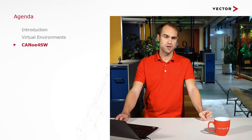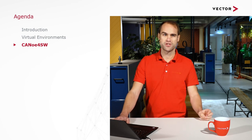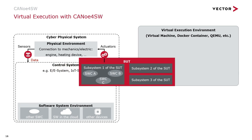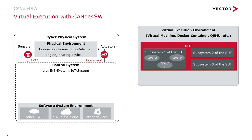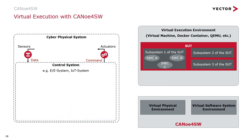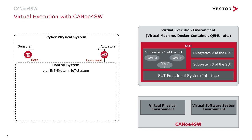To bring all this to life, we have developed a powerful tool at Vector, which is CANoe4SW. First of all, you start by putting your system under test into a virtual execution environment — this could be a virtual machine, a Docker container, or an emulator — pretty much anything that fits best your design flow. You then use CANoe4SW to model your physical environment as well as the software system environment. Finally, you connect the system under test at its functional system interface to those virtual models available in CANoe. The functional system interface — compared to the physical interface — is not the dials, but the functions inside the model or inside your system under test that access the values of those models. Showing you how this works in detail is out of the scope of this presentation, but I invite you to stop by at our booth and join one of our live tool demos where you can see CANoe4SW in action.